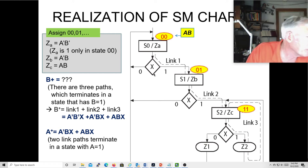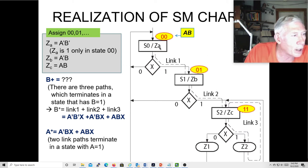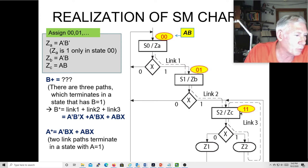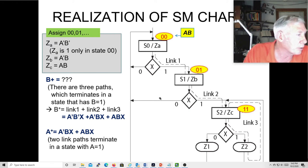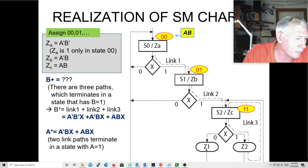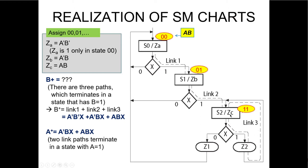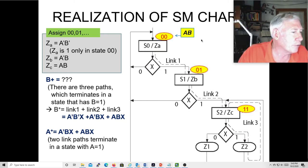The Moore outputs are even simpler. za is one whenever you're in a'b', so za = a'b'. zb = a'b. zc = ab. For the Mealy outputs there's none in the first two states, but in s2: when abx' you get z1, and when abx you get z2. That's all there is to it — pretty straightforward and a very efficient way to derive these equations.